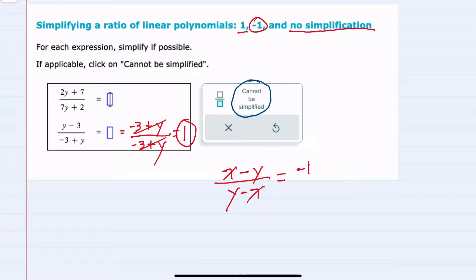if I had x minus y over y minus x here, if I factor a negative out of the numerator, factor out a negative 1, then my x would become negative and my y would become positive. If I wrote the y first, I can see that that would cancel with the denominator,